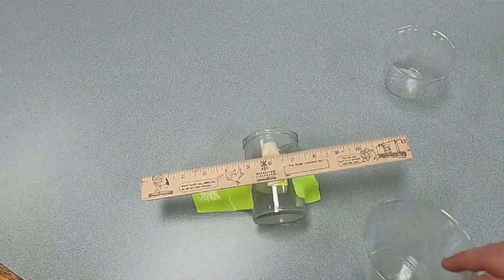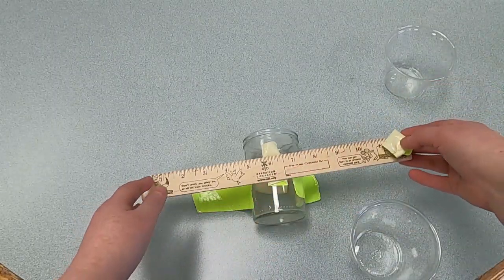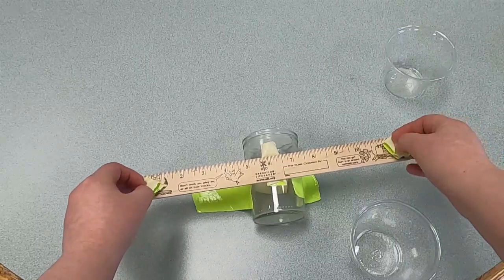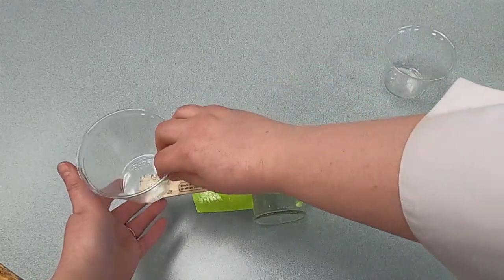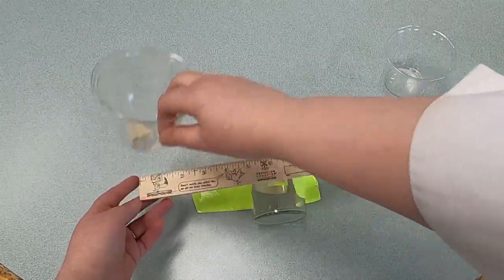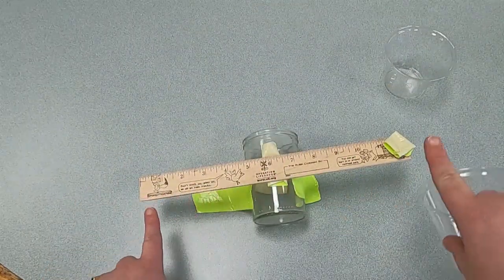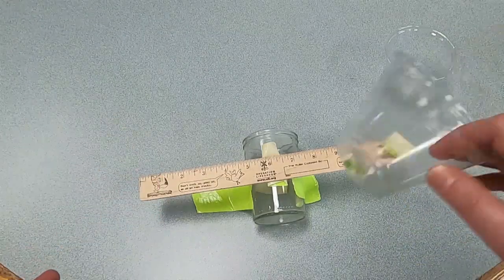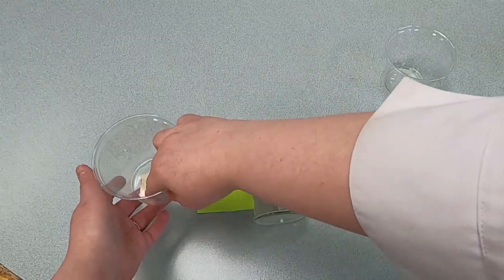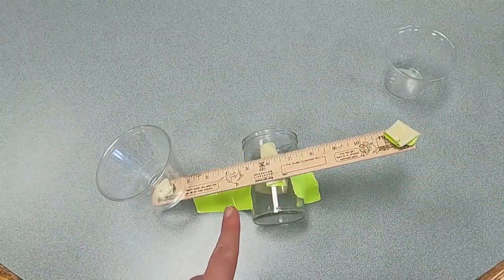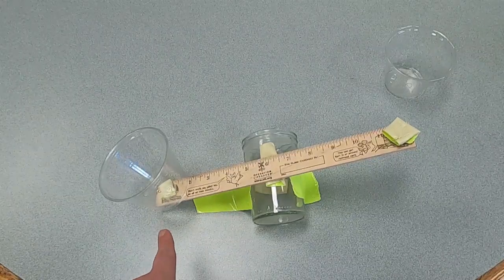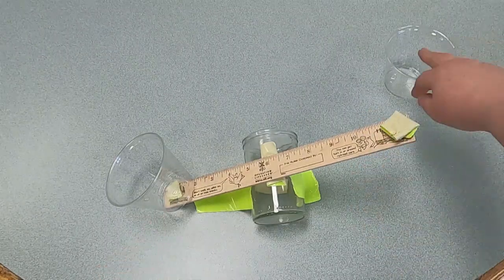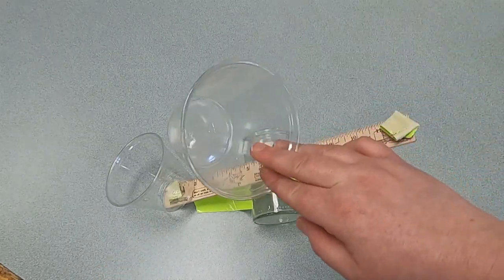Next step is we're going to attach our cups to either side. So let's put a piece of tape on both ends. Before we do that, notice how this is level. One side is not higher or lower than the other. That's because they're equal weight, or there's no weight on it. But let's see what happens when we put one of the cups on. See, as you can see, it's starting to sink. If one side weighs more than the other, the heavier side sinks down and the lighter side lifts up.